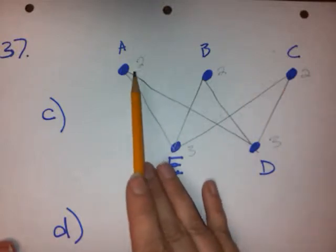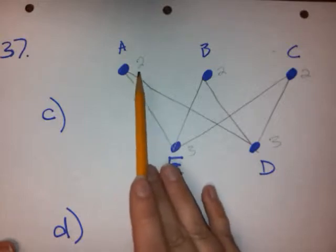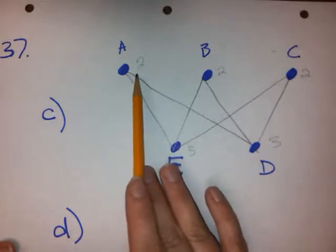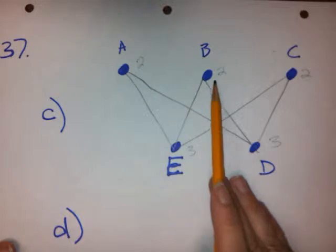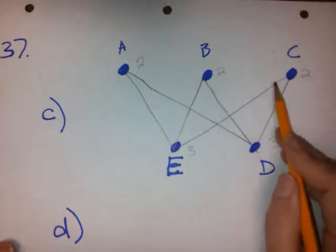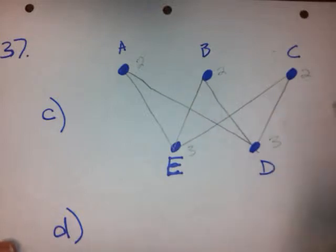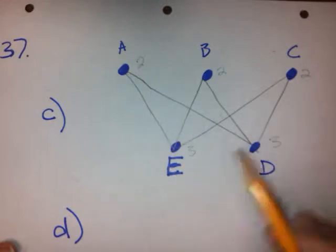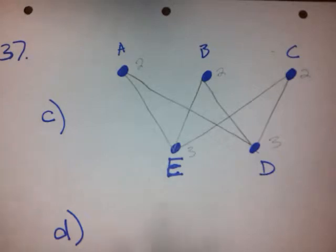I've already marked the graph. This vertex is even — it has two edges coming out of it. This one also has two edges, so it's even. This one has two edges, it's even. And then these two down here both have three edges, so they're odd. That would give us an Euler path because we have two odd vertices, but we're looking for an Euler circuit, so we're going to have to get rid of edges.